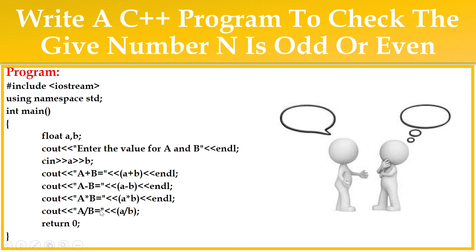The program starts with the preprocessor hash, followed by the keyword include and iostream, where I and O stands for input and output streams. Using is a keyword. Namespace is a logical naming scheme for grouping related classes. STD is standard, followed by int main, where int is a return type. Main is a main method — it's the entry point of a program. I've declared two variables, namely A and B, of float data type. I'm using cout to print a message: enter values for A and B. The user provides two values, stored in A and B using cin. Then I'm going to perform addition, subtraction, multiplication, and division operations using cout statements.